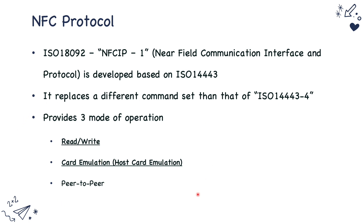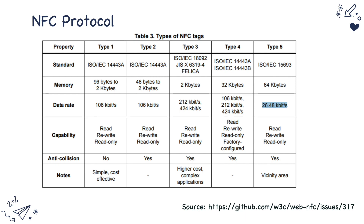To summarize, NFC protocol brings three modes of operation: in the first mode, we can read and write data into an NFC tag; in the second mode, the device can act like a contactless card for doing transactions; and in the third mode, two NFC devices can exchange data between them. The NFC protocol also classifies RFID/NFC tags into five different types: Type 1, Type 2, Type 3, Type 4, and Type 5.